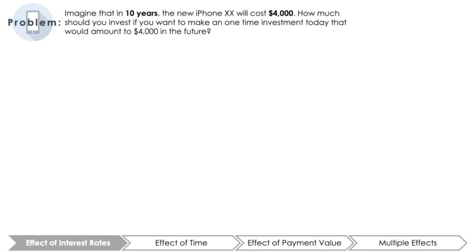Let's begin by thinking about something that you want to buy in the future. What about the new iPhone 20 that will come out 10 years from today? Imagine that in 10 years, that phone will cost $4,000. Now being conscientious, you have convinced yourself to start saving money now in order to ensure that you have enough money to buy the phone in the future. How much should you invest if you want to make a one-time investment today that would amount to $4,000 in the future?